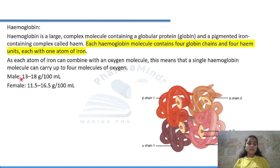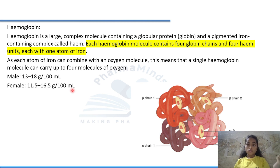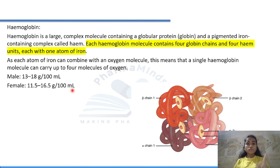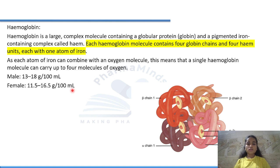Hemoglobin values: male — 13 to 18 g per 100 ml; female — 11.5 to 16.5 g per 100 ml. Key points: hemoglobin consists of globin and heme; each molecule has 4 globin chains and 4 heme units; each heme unit has one iron atom; one hemoglobin molecule carries four molecules of oxygen.